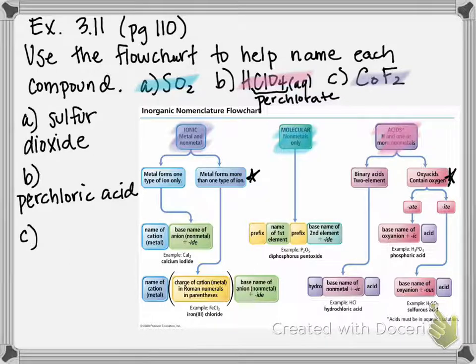So in order to figure out what charge cobalt is, we need to remember that as an ion, fluorine forms minus one ions. Since I have two of them, they have a total two minus charge that they contribute to our compound.